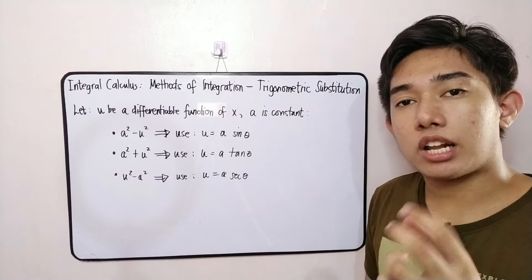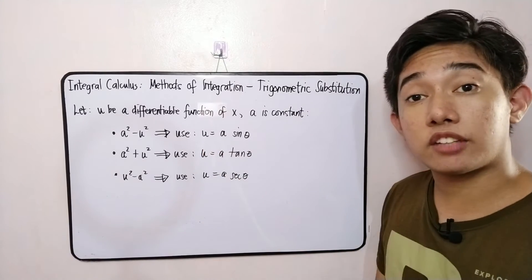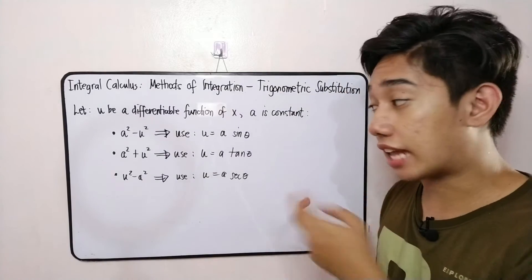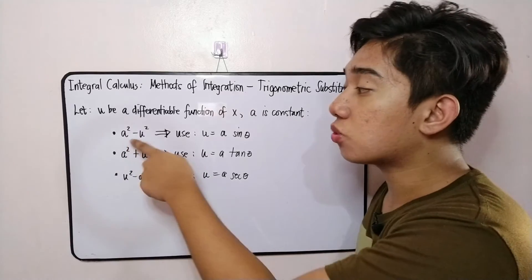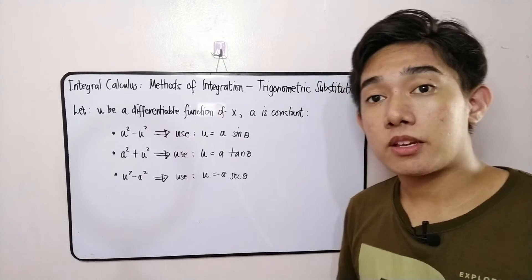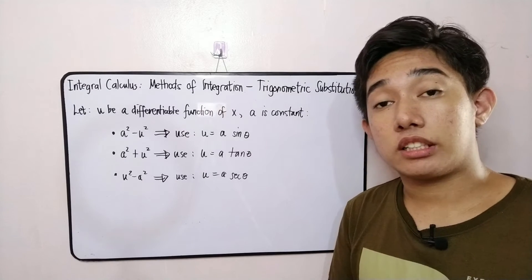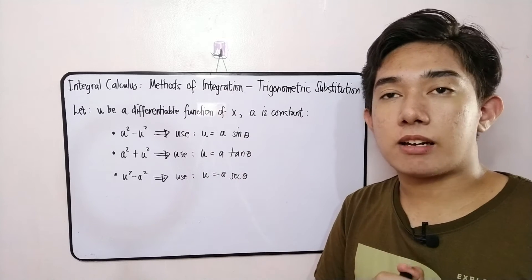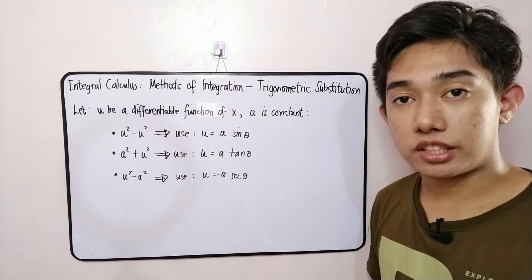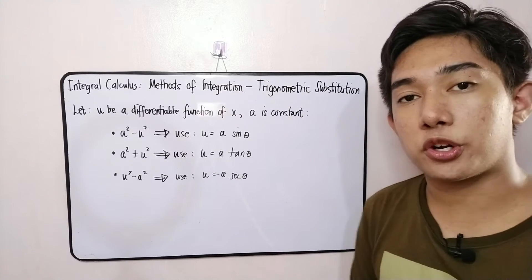This has a similarity to the lesson on integrals yielding inverse trigonometric functions, in which we identify our u and our a. We can see that u squared minus a squared is for inverse secant, a squared plus u squared is for inverse tangent, and a squared minus u squared is for inverse sine. So if you contrast the two, they share similarity but differ in use. This method will be used for the complicated cases where there is no fundamental rule that applies to your expression.